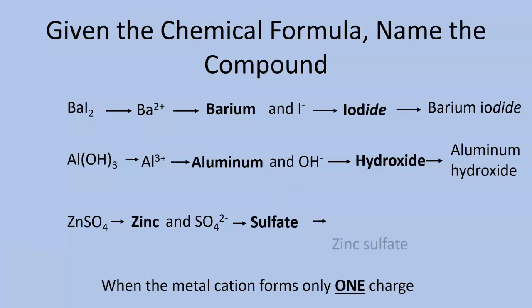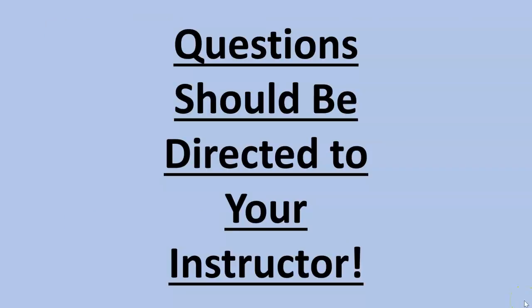So if you have questions, those questions should be directed directly to your instructor. You can also pop over to your video library. You should be able to find videos that could answer other questions that might go along with some of these that you're working out in this particular section of the nomenclature lab. But I hope this video gives you a little bit of insight on how to name these compounds if your metal cation only forms one charge.